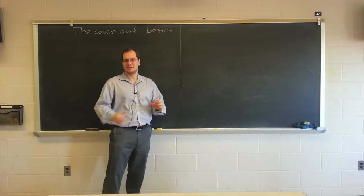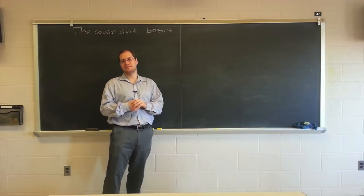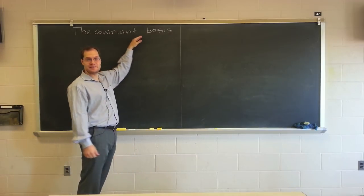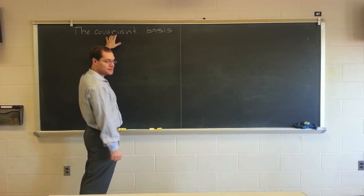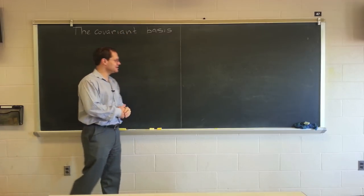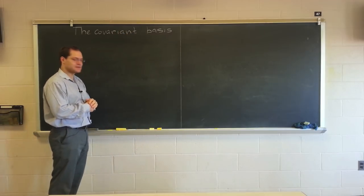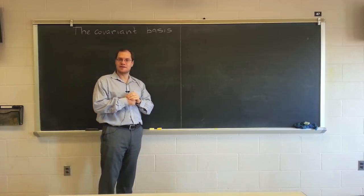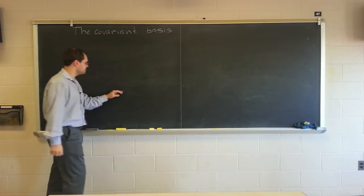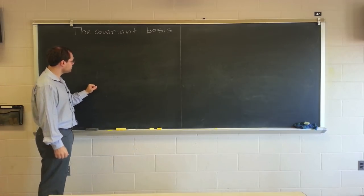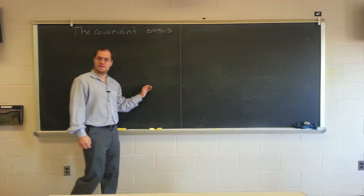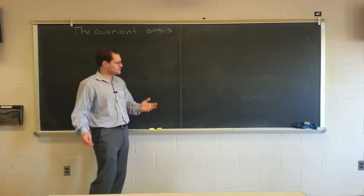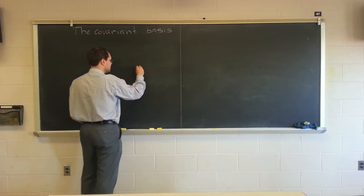So this basis — the coordinate basis — which in our world we call the covariant basis. The meaning of the word covariant will become apparent a little bit later on. i and j will be called the covariant basis, not just the coordinate basis. It is defined the following way. We'll do it in the case of polar coordinates, but of course it works for all coordinate systems.